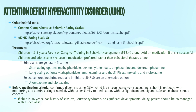In children four and five years old, it's recommended to begin with parent or caregiver training in behavior management, or PTBM. This is recommended as monotherapy first, and medication can be added on if it's unsuccessful. For children less than six years who do end up requiring pharmacotherapy, it's recommended that they be co-managed with a specialist. So under six years old, they really need to be referred.